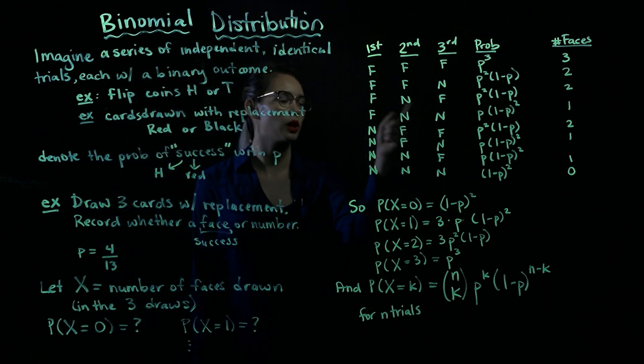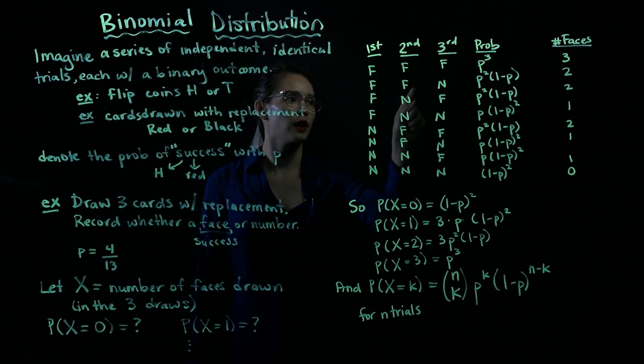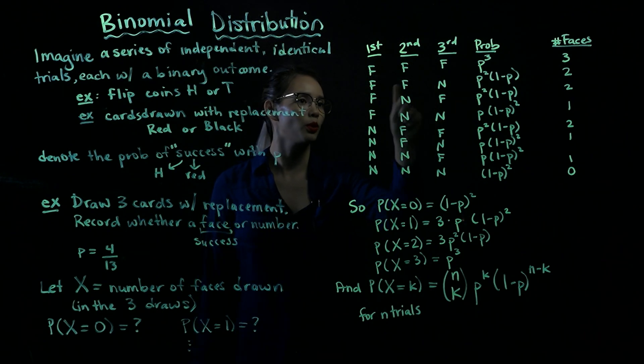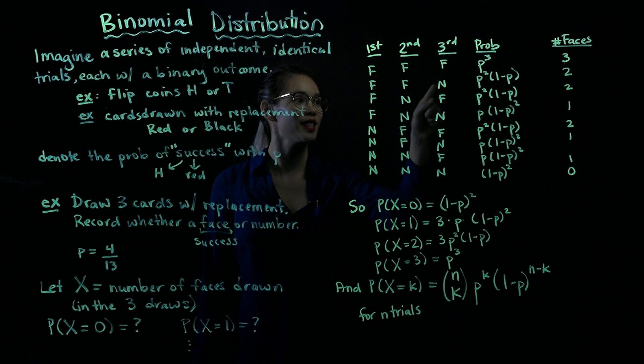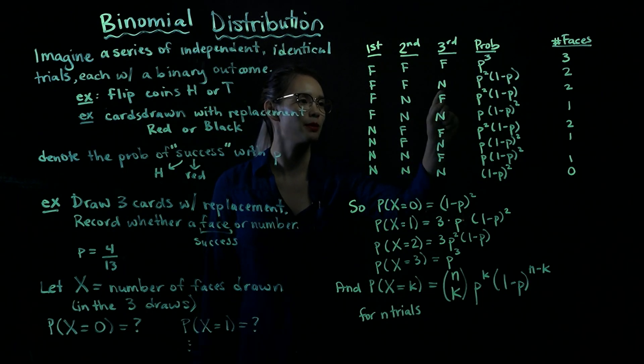And then we could look at a couple more of these. Face, face, number. Well, two faces, so we have two successes. So we have P squared times the probability of getting a number now, which is 1 minus P. So we can go through and do all of these.